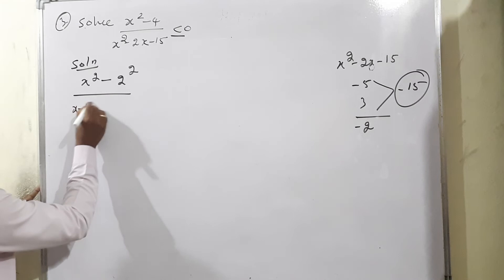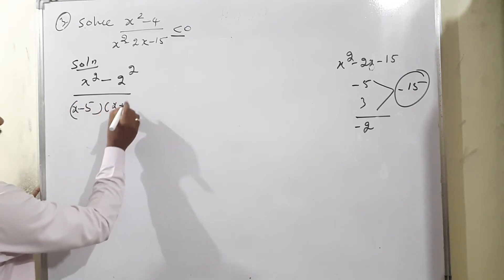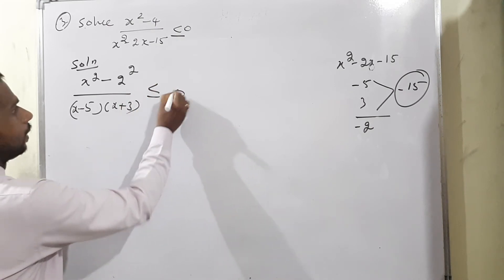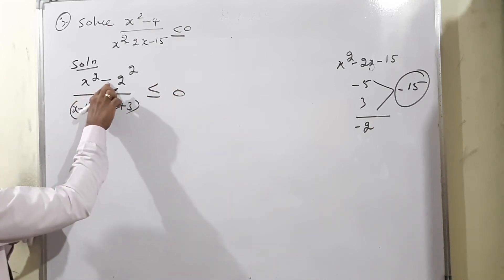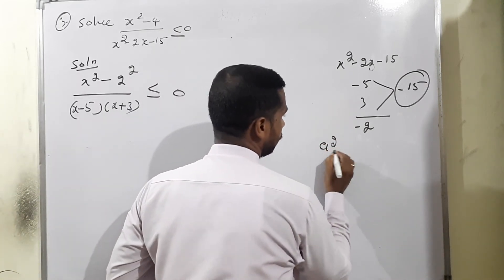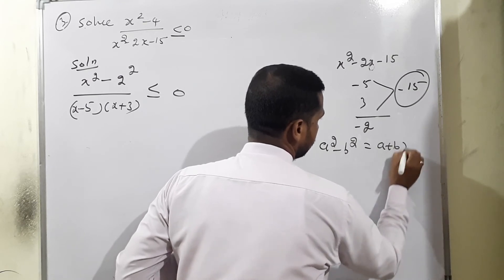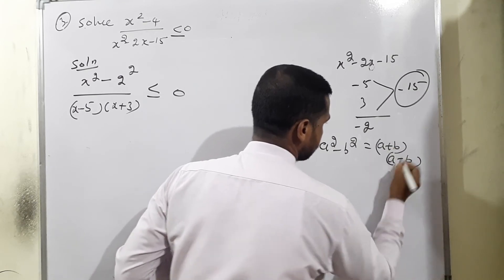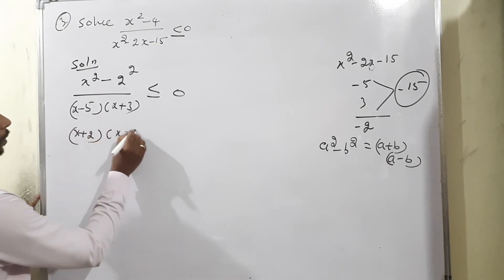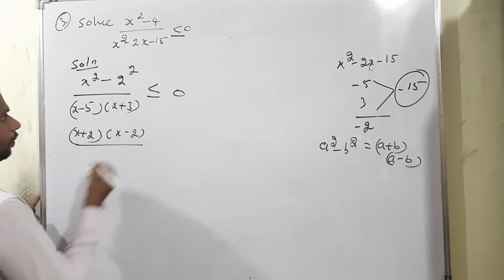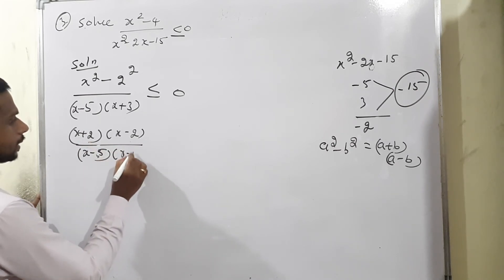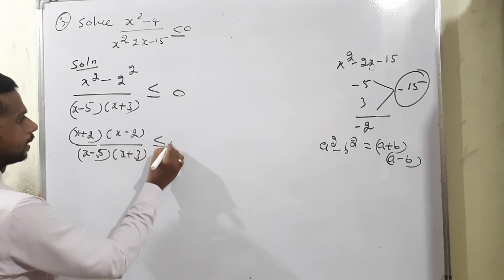The denominator factors as (x-5)(x+3). Therefore the expression becomes (x+2)(x-2)/((x-5)(x+3)) ≤ 0. Critical points: x=-2, x=2, x=5, x=-3. On the number line: -3, -2, 2, 5, creating five intervals.